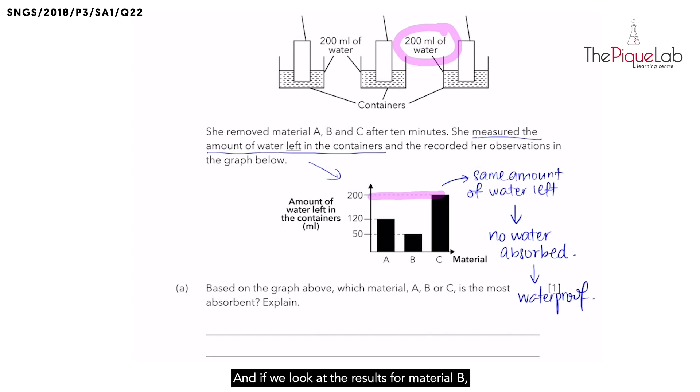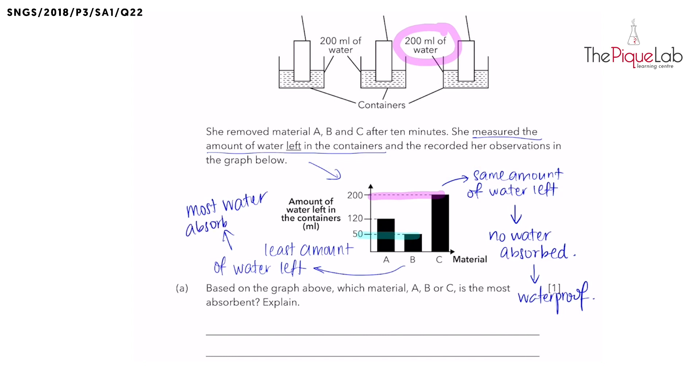And if we look at the results for material B, it had the least amount of water left in the container as compared to the other two. So let's write down least amount of water left. What happened to most of the water? Most of the water was absorbed by material B. Most water absorbed. And this shows that material B must be the most absorbent material out of the three. Most absorbent.